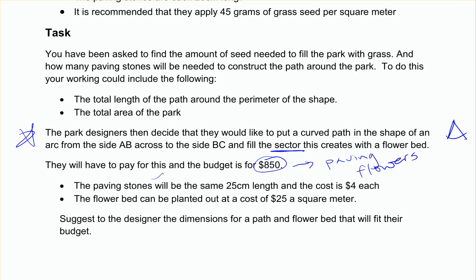So they want us to pay for it under a budget of $850. Now that has to include the paving stones for the path, as well as planting of flowers into the area that's gardened. And the costs are still the same as they would be for the rest of it. And we need to suggest to the designer dimensions for that path and flower bed that will fit within their budget.